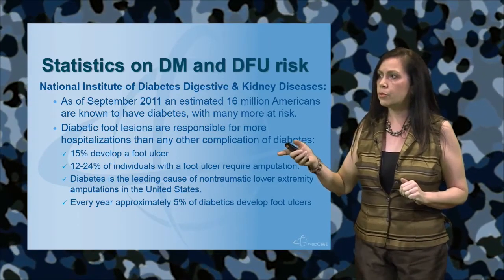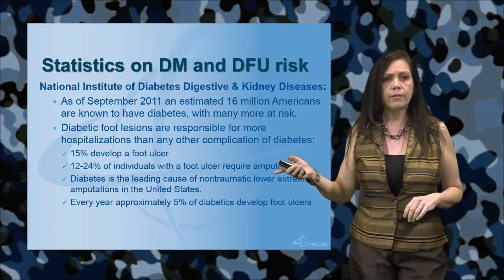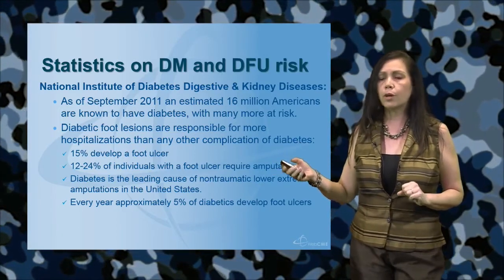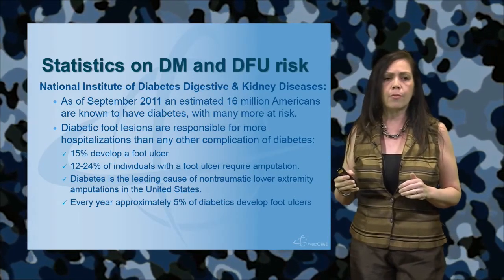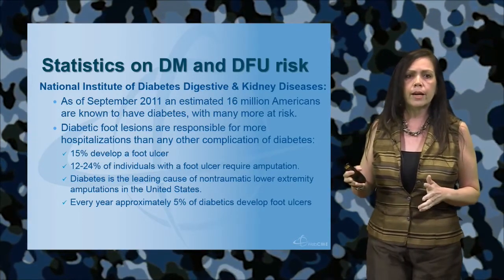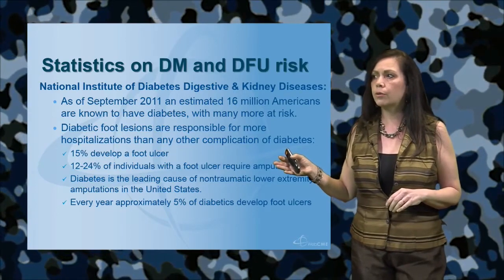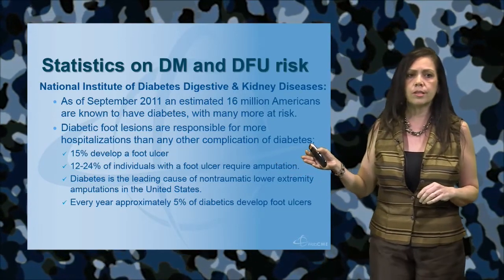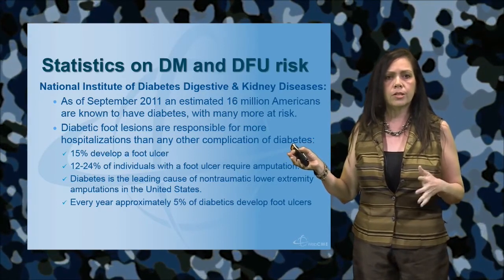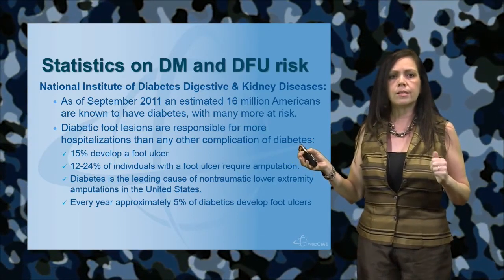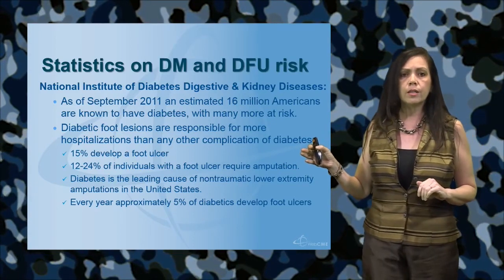About 15% of individuals will develop a foot ulcer, and 12 to 24% of these individuals with a foot ulcer require amputations. This is something we're going to discuss throughout this lecture. Diabetes is the leading cause of non-traumatic lower extremity amputations in the United States — this is really one of the key pearls and takeaway points for you to digest.